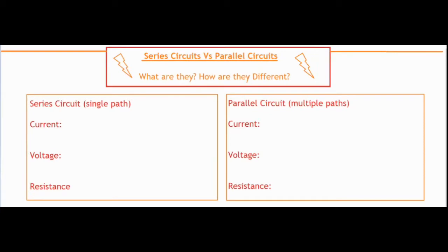In this video I'm going to be talking about series circuits versus parallel circuits — what are they and how are they different? A series circuit is an electrical circuit that's wired up so there's only a single path for the electrons to travel through, and a parallel circuit is an electrical circuit where there's multiple paths or loops for the electrons to travel through, that look something like this.